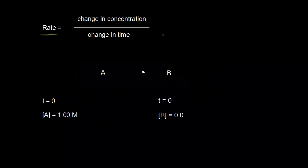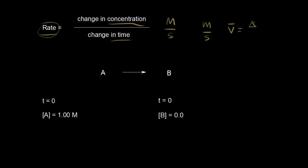The rate of a chemical reaction is defined as the change in the concentration of a reactant or a product over the change in time. Concentration is in moles per liter, or molar, and time is in seconds, so we express the rate of a chemical reaction in molar per second. Molar per second sounds a lot like meters per second, which is our unit for velocity — average velocity equals the change in x over the change in time. Thinking about average velocity helps you understand the definition for rate of reaction in chemistry.